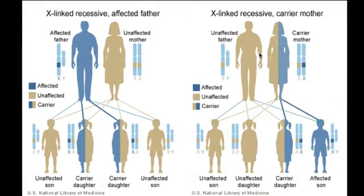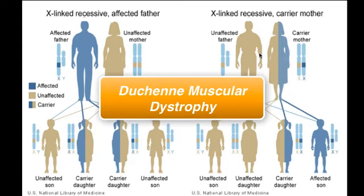Other X-linked traits are much more serious than colorblindness and can lead to abnormal development and even early deaths. Duchenne muscular dystrophy is X-linked. This is a disease that affects the production of a protein for normal muscle structure. Without the normal gene, an individual's muscles become rigid, and individuals with the disease rarely live past their twenties.